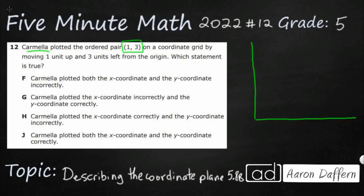So I'm going to draw my coordinate grid. The line that goes horizontally is my x-axis — it starts at 0, and I'll mark 1, 2, and 3 spaced out. Then my line that goes vertically also starts with 0 — that's my y-axis — and that gives me 1, 2, and 3. So there's an approximation of a coordinate grid, and what we're trying to do is plot the ordered pair (1, 3), which is what Carmela did.